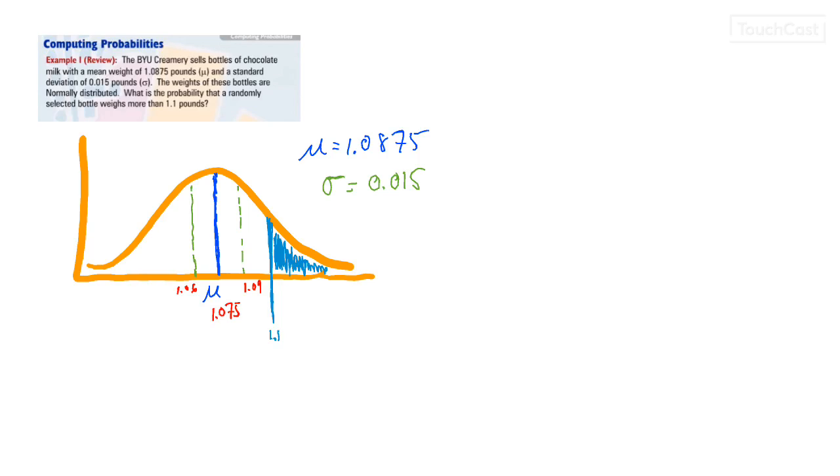Now that we have that, if it's a probability, we're looking for the probability that something occurs, then we need to use a z-score. So if you recall, the formula for a z-score is z equals x minus mu over sigma.